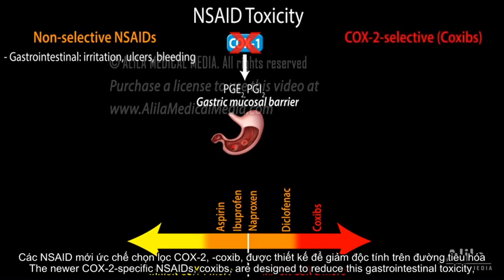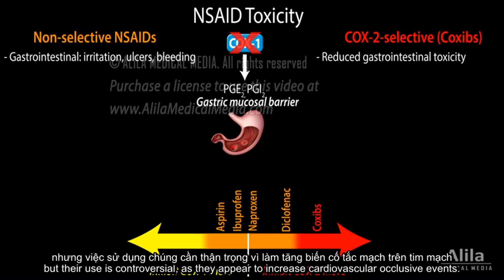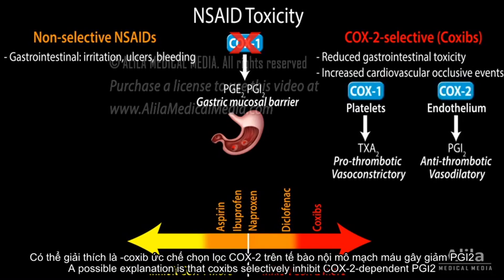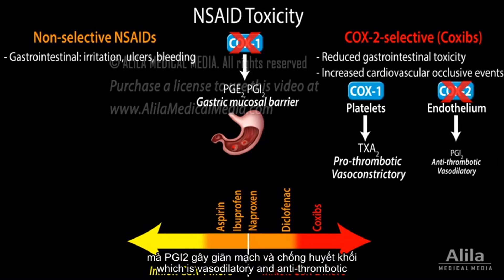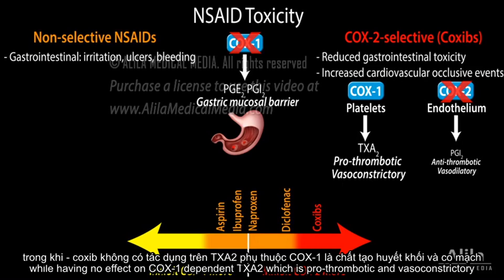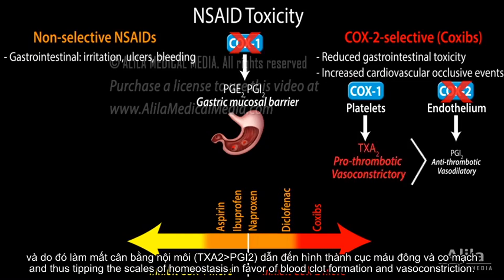The newer COX2-specific NSAIDs, COXIBs, are designed to reduce this gastrointestinal toxicity, but their use is controversial, as they appear to increase cardiovascular occlusive events. A possible explanation is that COXIBs selectively inhibit COX2-dependent PGI2, which is vasodilatory and antithrombotic, while having no effect on COX1-dependent TXA2, which is prothrombotic and vasoconstrictory, thus tipping the scales of homeostasis in favor of blood clot formation and vasoconstriction.